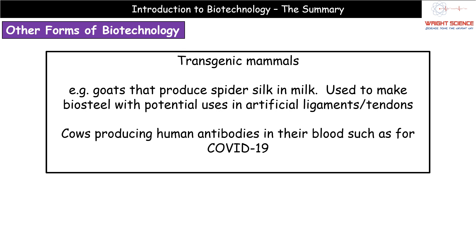It's worth mentioning other forms of biotechnology. Beyond genetic modification of microorganisms, we also use biotechnology to modify mammals — not changing huge portions of their genome, just small tweaks. A notable example is goats that have been genetically modified to produce spider silk in their milk. This spider silk can be used to make a substance called Biosteel — 'bio' from living organisms, 'steel' reflecting its use in structural applications.